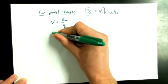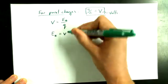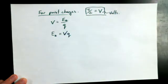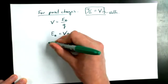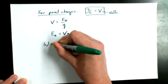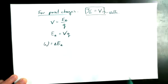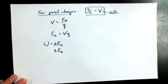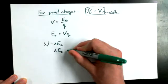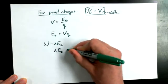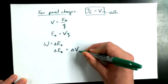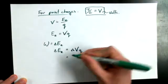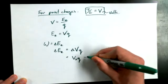So if this is true, it must also be true that we can rearrange it to get electric potential energy by itself, which is equal to the electric potential times the charge that's present. And so if I wanted to talk about doing work, I could talk about a change in electric potential energy, which I can express in terms of electric potential. A change in electric potential energy equals change in electric potential times the charge present, which can be expressed as V2 times Q minus V1 times Q.